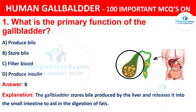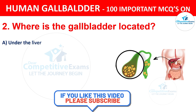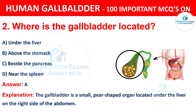Question 2: Where is the gallbladder located? Your options are: A) Under the liver, B) Above the stomach, C) Beside the pancreas, D) Near the spleen. The correct answer is A, i.e. Under the liver. The gallbladder is a small pear-shaped organ located under the liver on the right side of the abdomen.